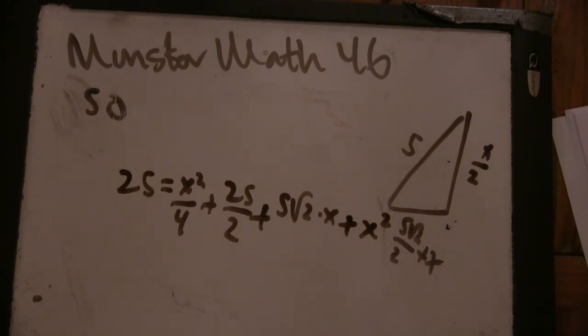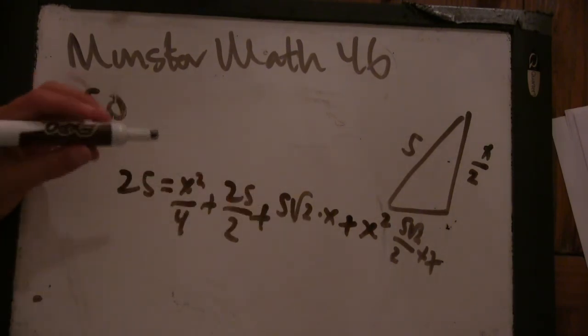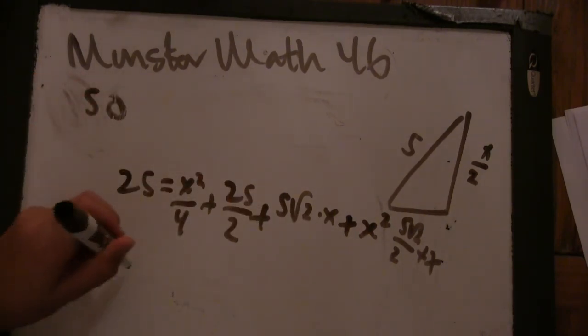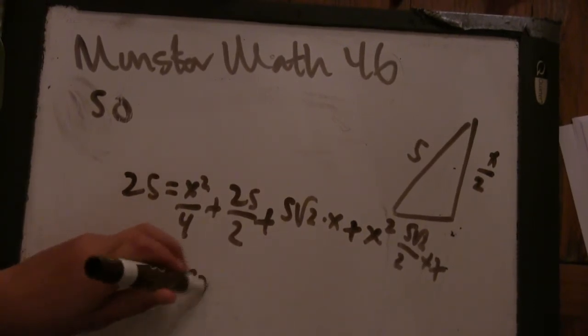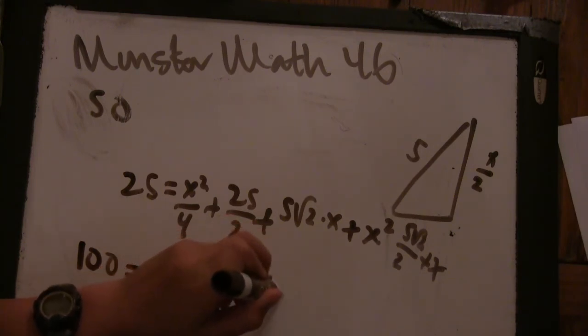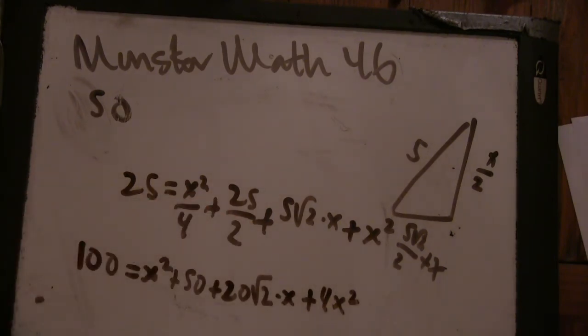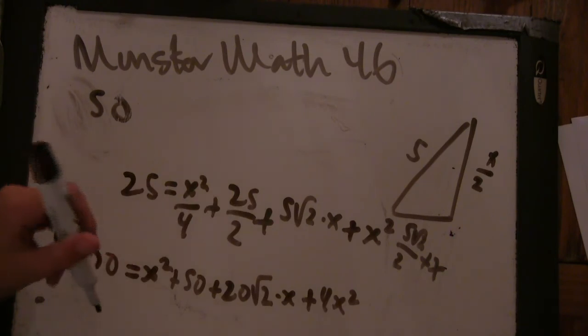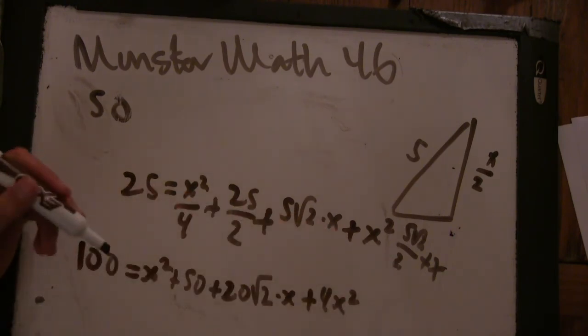Well, I'm going to multiply by 4 to clear the denominators. So 100 equals X squared plus 50 plus 20 root 2 times X plus 4X squared. All right. Well, I guess we have a quadratic now. But because this is a math cons problem, hopefully X is going to be really easy. Yeah. So why don't you do a little simplifying first? I can divide by 5. Okay.